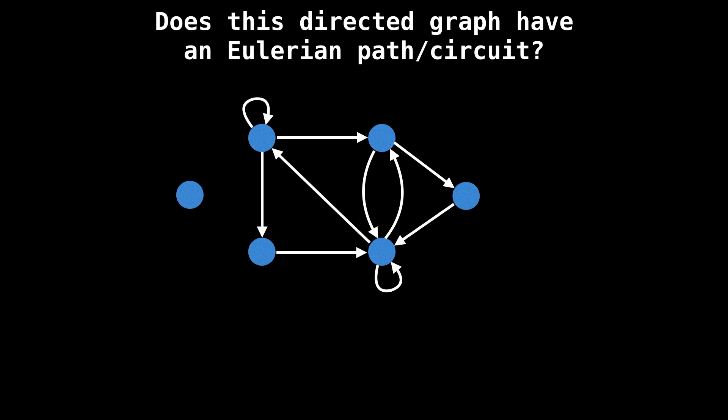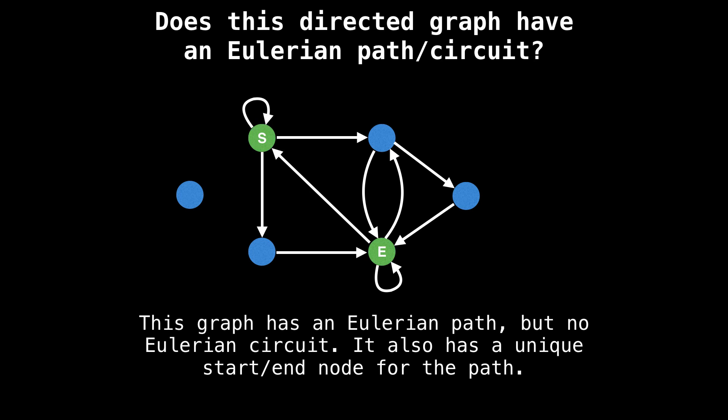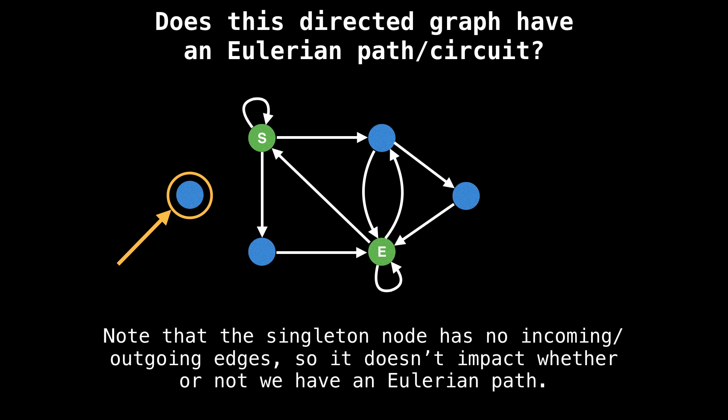What about this graph? I'll give you a bit more time because there are a lot of edges. This graph only has an Eulerian path, but no Eulerian circuit. It also has a unique start and end node for the path. Note that the singleton node has no incoming or outgoing edges, so it doesn't impact whether or not we have an Eulerian path.